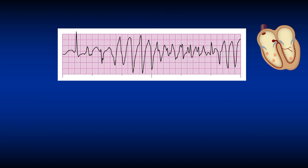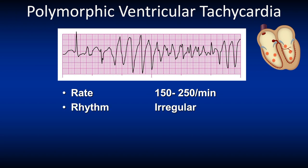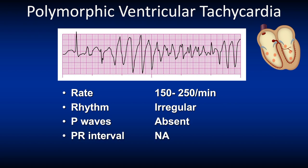This slide shows a polymorphic ventricular tachycardia. The rate is 150 to 250 per minute, the rhythm is irregular, P waves are absent, there is no PR interval, and the QRS complex is wide.